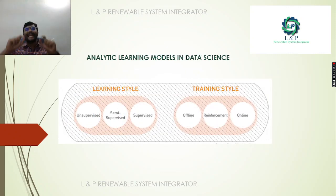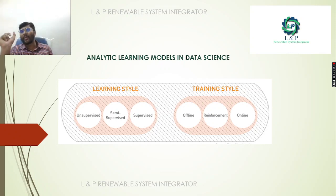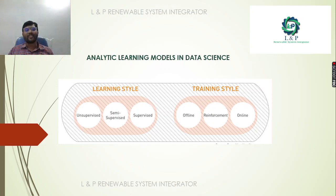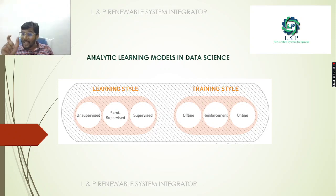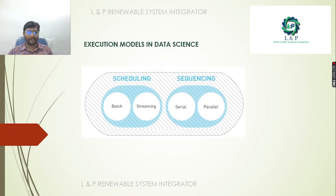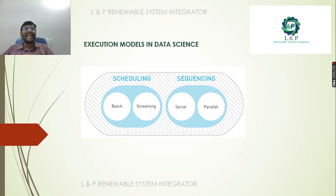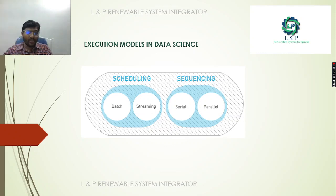The analytical learning model has two categories: learning style and training style. In learning style we have unsupervised, semi-supervised, and supervised. In training style we have offline, online, and reinforcement. In the execution model of data science we have scheduling and sequencing — inside scheduling, batch and streaming are important; inside sequencing, serial and parallel are important.